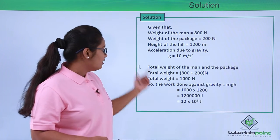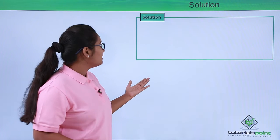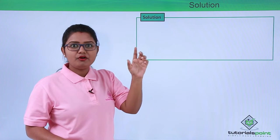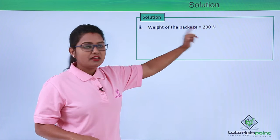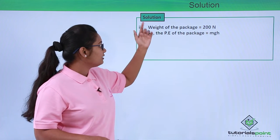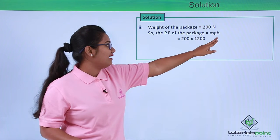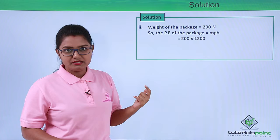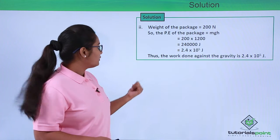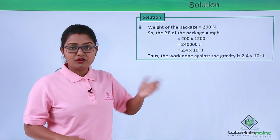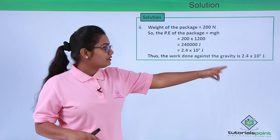The second thing we need to find is the potential energy of the package at the top of the hill. The weight of the package is 200 Newton. Using the formula for potential energy, PE = mgh, we substitute mg as 200 Newton and h as 1200 meters. Solving this gives 200 × 1200 = 2.4 × 10⁵ joules. So the potential energy of the package at point A is 2.4 × 10⁵ joules.